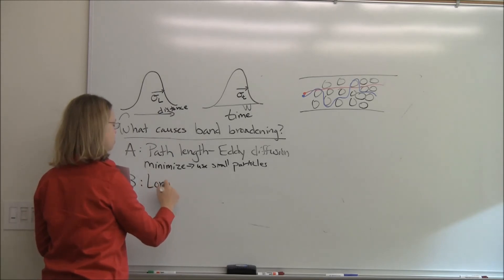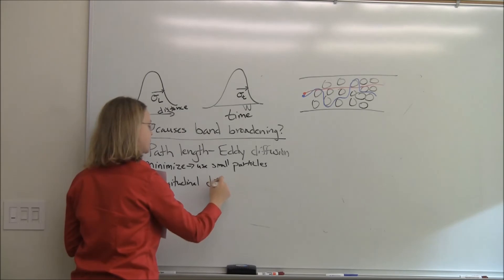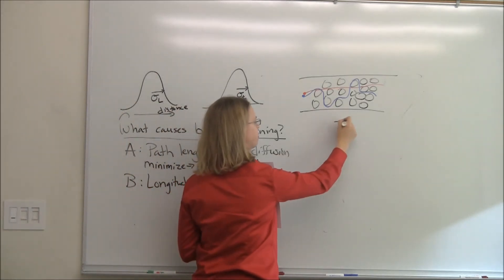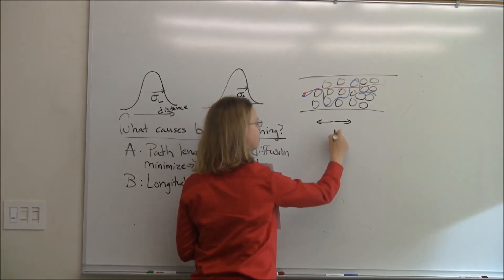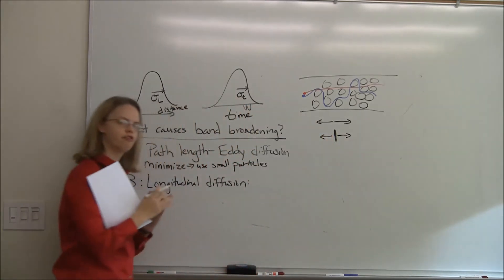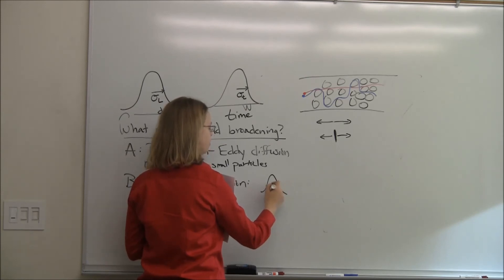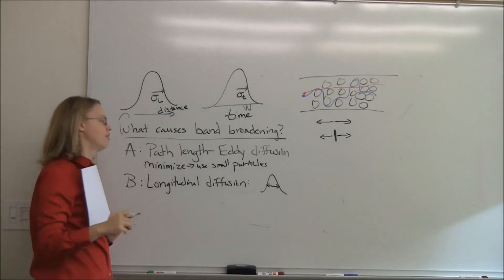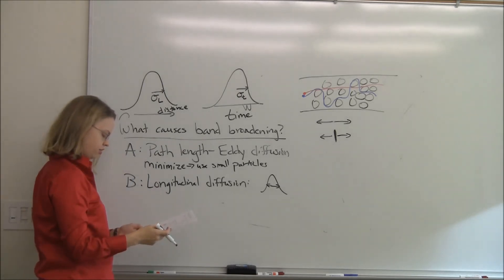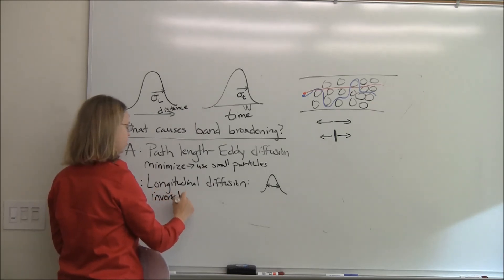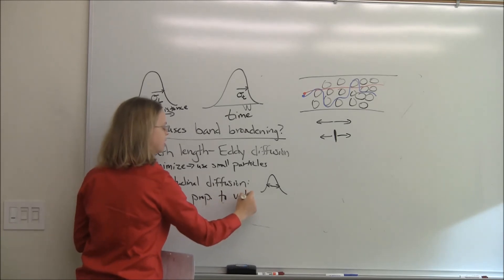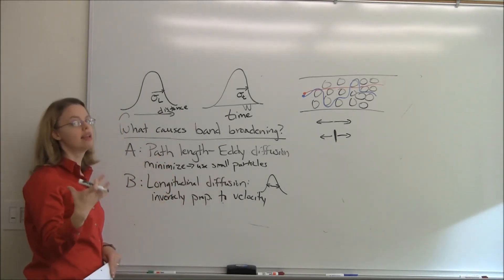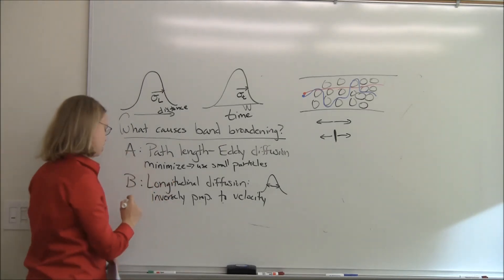The B term is called longitudinal diffusion. If you have a narrow band in the column, entropy and concentration gradients cause molecules to diffuse outward from the center along the column axis. Longitudinal diffusion is inversely proportional to velocity: if you push stuff through really fast, it doesn't have much time to spread out. If you go very slow, it has more time to spread. So it's better to go faster to minimize the B term.